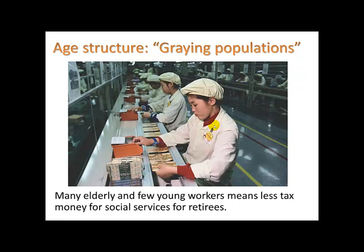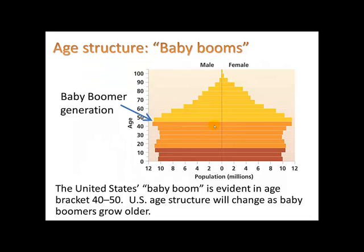We call this a graying population, where you have a larger number of older people than younger people. Many elderly and few young workers means less tax money for social services for retirees, which can really wreak havoc on a country's economy. In our country, we saw the baby boomer generation — born when soldiers came back from World War II — and today they're in their 60s. One of our concerns economically is how do we provide care to this aging baby boomer population who are starting to retire, going on Social Security benefits, Medicare benefits, and other things that retired people receive.